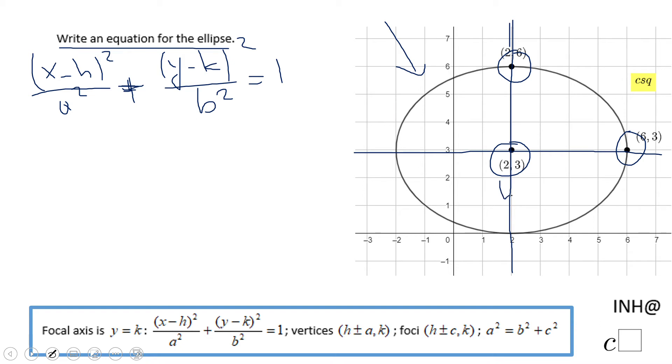The first thing we notice here are h and k, which are these coordinates, the coordinates of the center. So we're going to have x minus two squared and y minus three squared. Now, how do I find a and b?